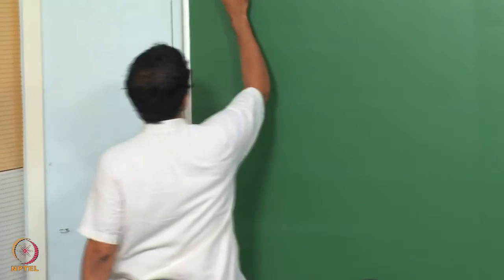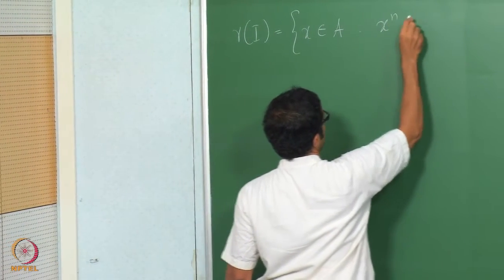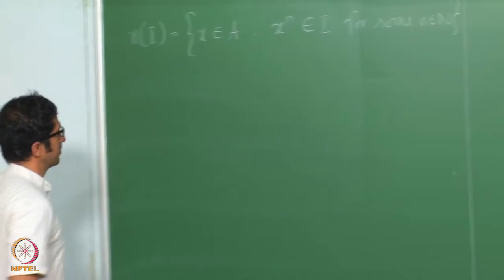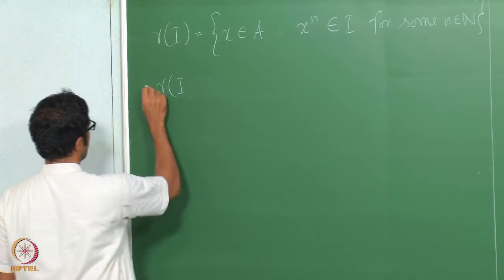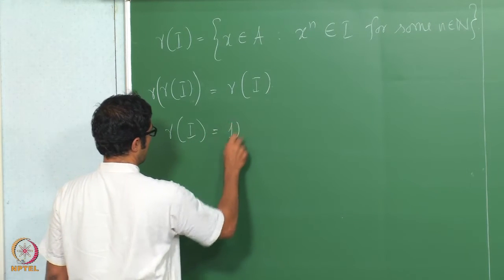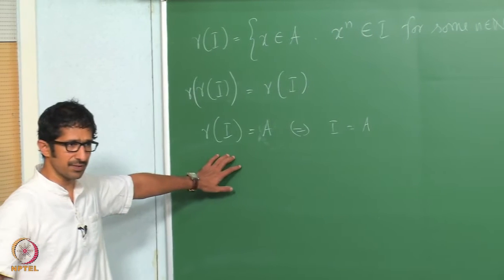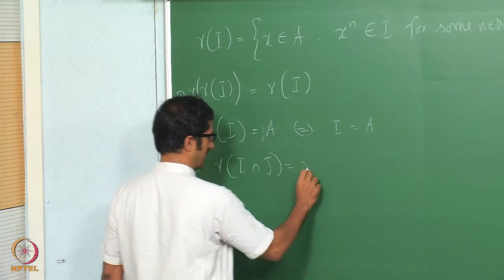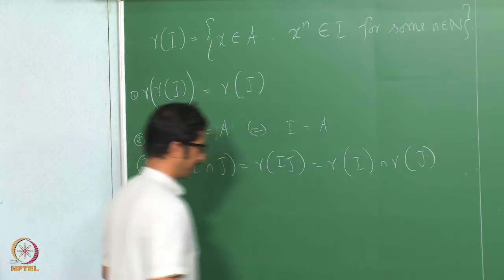Let us recall: the radical of an ideal I is the set of all x in A such that x^n belongs to I for some n in ℕ. We proved that radical of radical of I equals radical of I; radical of I is the whole ring if and only if I is the whole ring; and radical of I∩J equals radical of IJ, which equals radical of I intersected with radical of J.